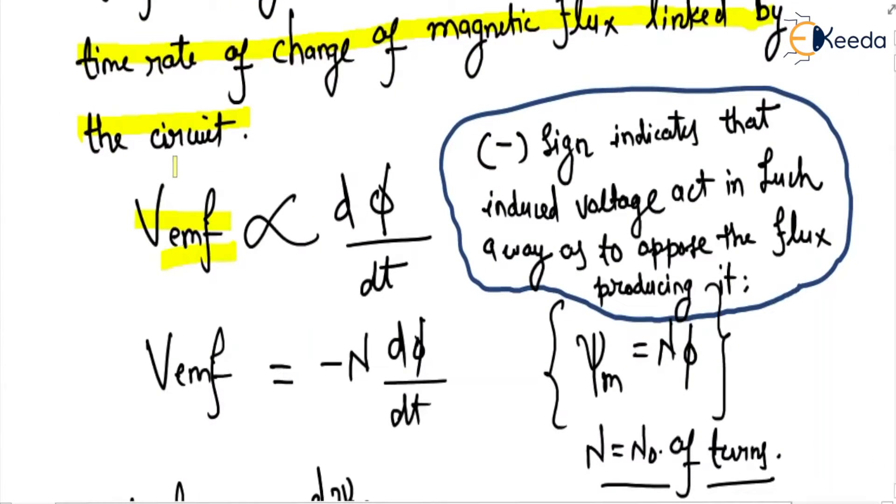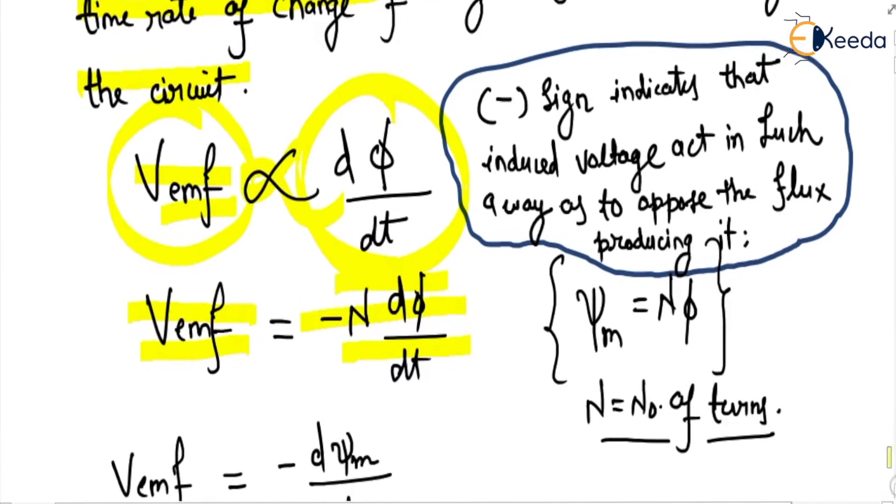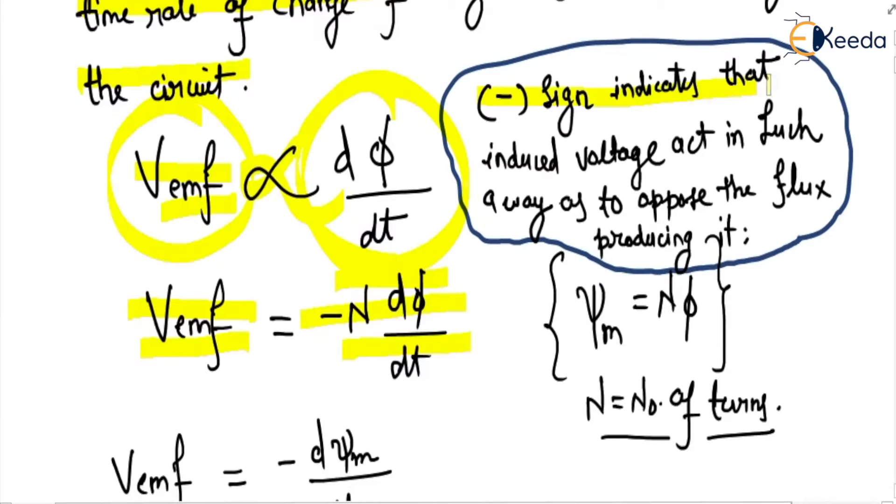So V emf, the emf induced, is directly proportional to d phi over dt. And when we remove this proportionality then V emf is minus n d phi over dt. Here negative sign indicates that induced voltage acts in such a way as to oppose the flux producing it.